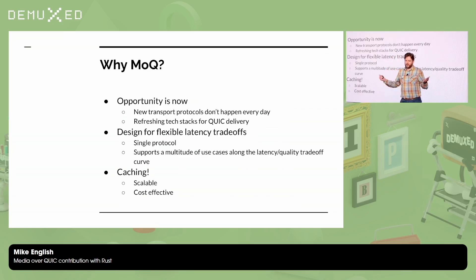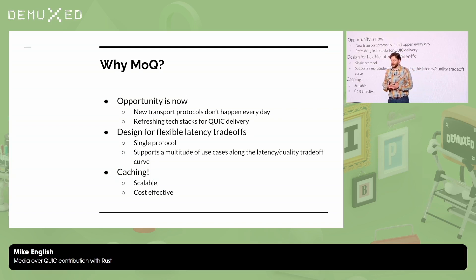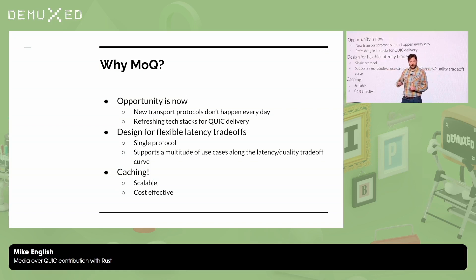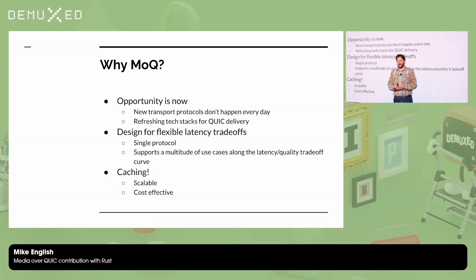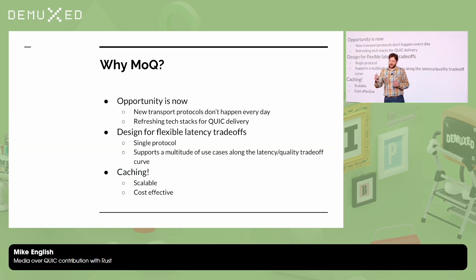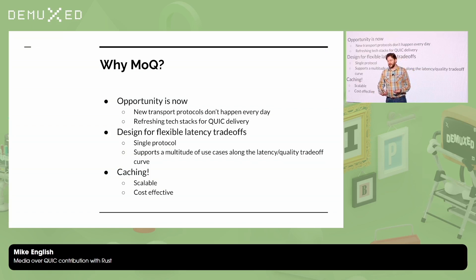So why Media over QUIC? Now is the time to do something — we have a new transport protocol and people are already retooling for HTTP/3 delivery. That doesn't happen every day. Media over QUIC gives us the ability to design for flexible latency trade-offs. Browser implementations of WebRTC tend to be pinned to video conferencing latency, which may not be what you want when broadcasting sports or a live event where you want more quality even at relatively low latency. Media over QUIC is designed to let you make that decision. And caching — at these latencies you typically can't have caching and the low cost that comes with it. Media over QUIC is designed to provide that.